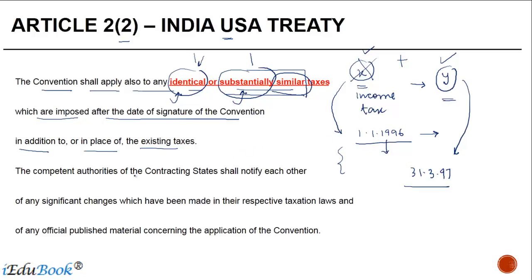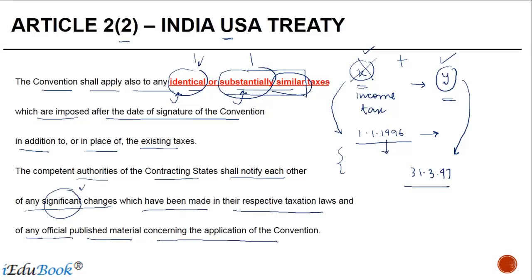The competent authorities of the contracting states shall notify each other of any significant changes — the word 'significant' is important — which have been made in their respective taxation laws and of any official published material concerning the application of the convention. If there is a designated change that is significant with respect to these taxes, the contracting state's competent authorities are under an obligation to inform the other state about such changes.